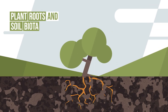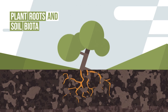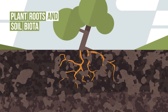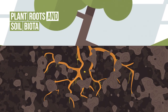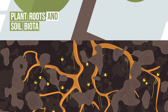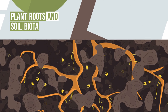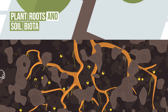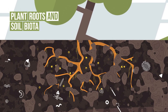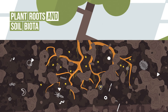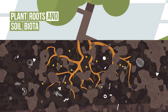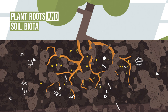The rhizosphere is the region of soil that's influenced by roots. Roots exude many substances into soil, including carbon-rich molecules that are sources of energy and carbon for microorganisms. This process stimulates the food web of organisms around roots. In particular, soil animals increase in abundance in response to an increased activity of bacteria and fungi.